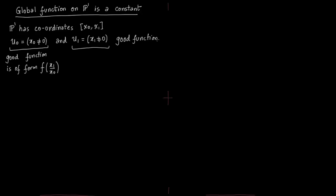Similarly, a good function on U1, where x1 is not equal to 0, takes the form g(x0/x1) — that is, you divide by x1 to de-homogenize it. So you have a homogeneous polynomial on the projective line and you de-homogenize it when you restrict to each open cover.